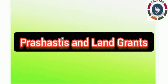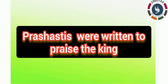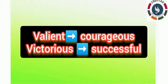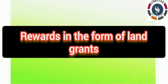The next topic is Prashasti and land grants. Prashasti was a written document about the king in which the king was always praised. The king was depicted as a valiant — that is, courageous — and victorious warrior who always achieved victory. Brahmanas used to write such works called Prashasti. In return, they would receive rewards from the king.